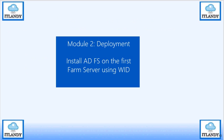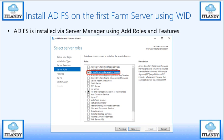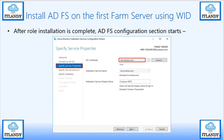Next is installing your first ADFS server. It's a server role in Windows Server, so you go to Server Manager, use Add Roles and Features, select Active Directory Federation Services, and click Next. You will need to specify the certificate — either a standard certificate or a wildcard certificate to cover all names, including device registration certificates.